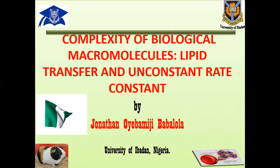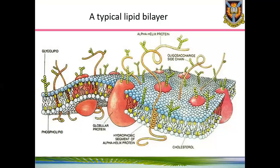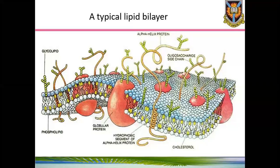So this is a typical lipid bilayer, which is very important for all membranes. You can see the structure is really complex. You have oligosaccharides, you have alpha helix proteins, you have lipids in between, you have globular protein, you have phospholipid. This complex structure is necessary for the membrane to function well.